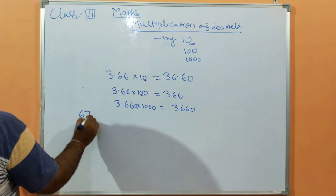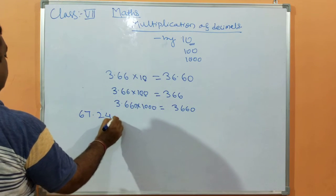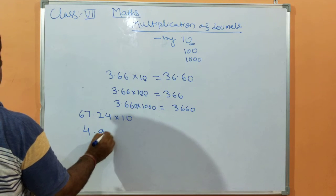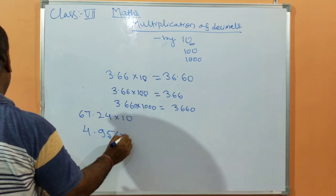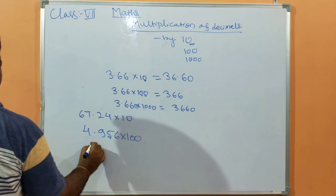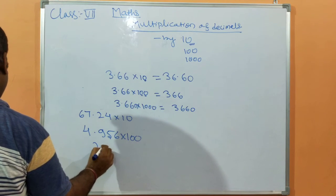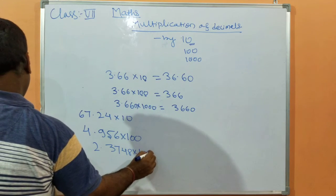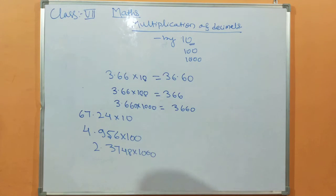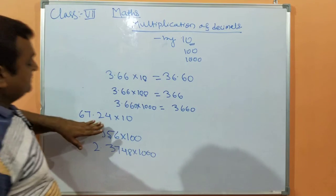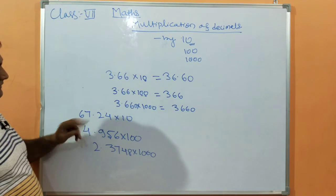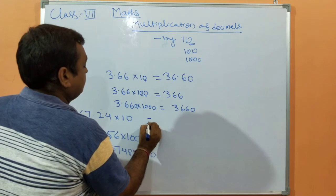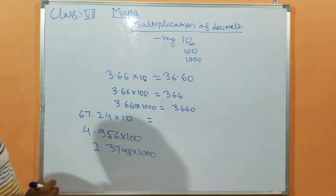We can take another example. For example, 67.24 multiplied by 10, 4.956 multiplied by 100, and 2.3748 multiplied by 1000. First of all, irrespective of the decimal point, we multiply the number, and then we change the decimal position.